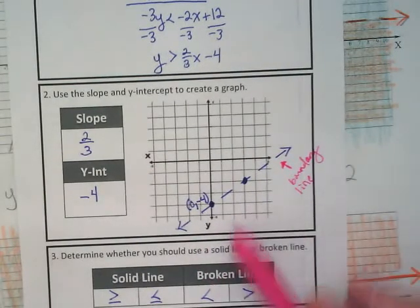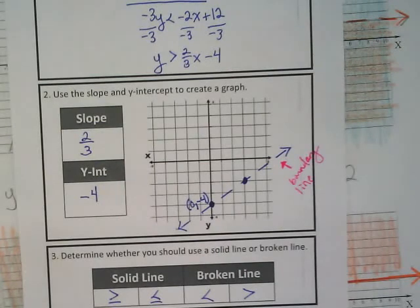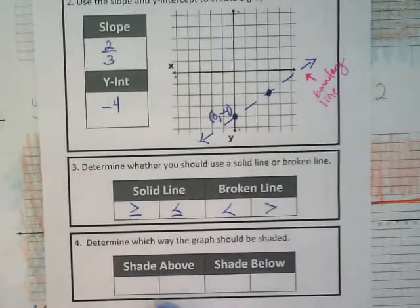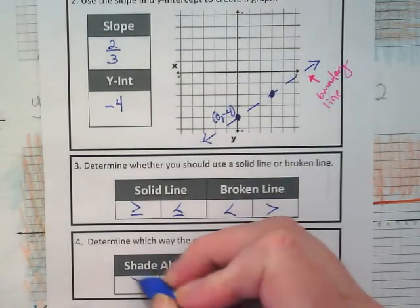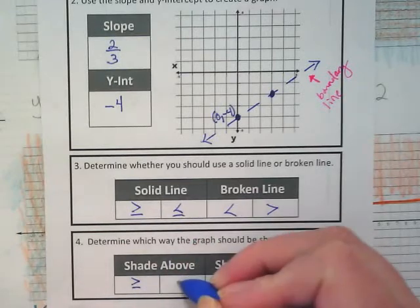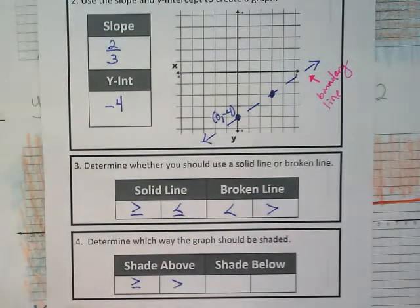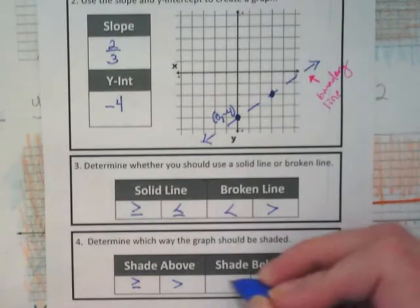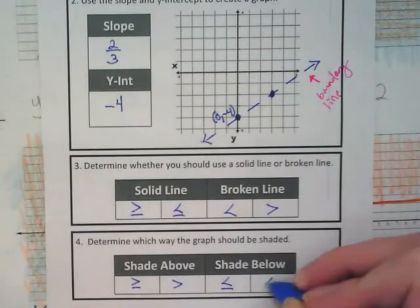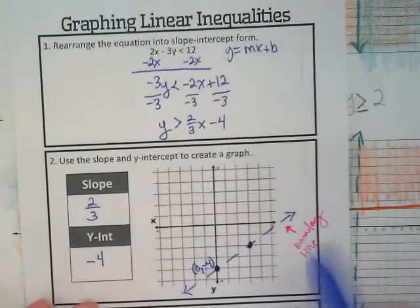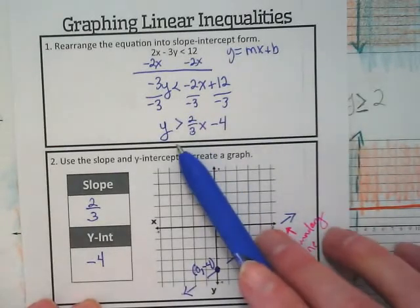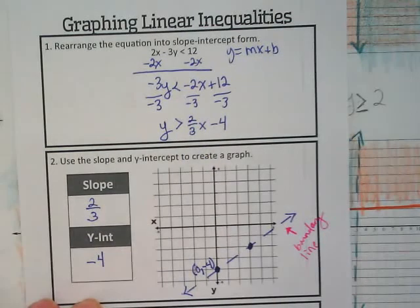This boundary line is telling us which side of this line is going to include our answers. And that's what this shade above or shade below part tells us. So if we have greater than or equal to or greater than, we shade above the line. If we have less than or equal to or less than, we shade below the line.